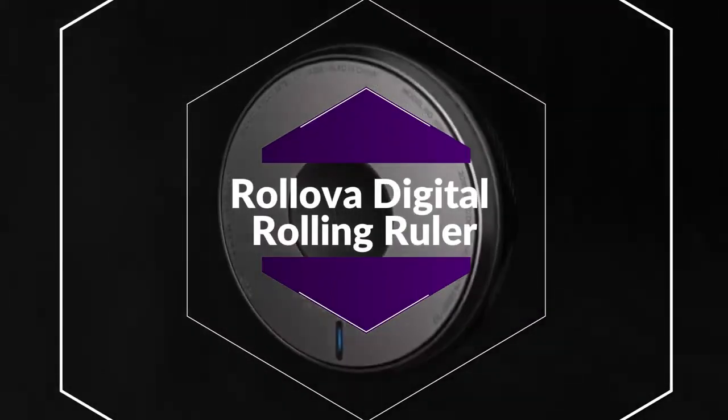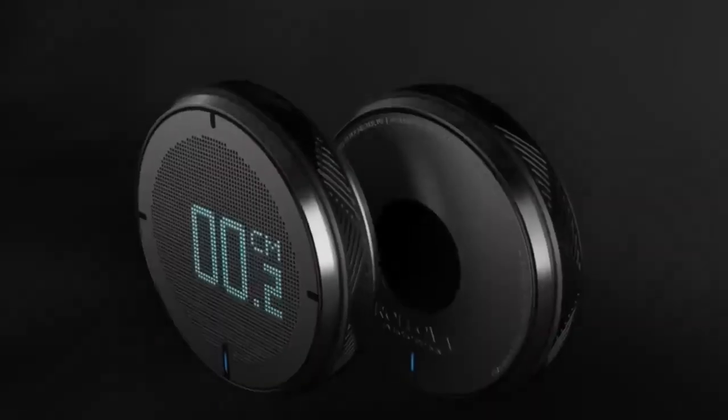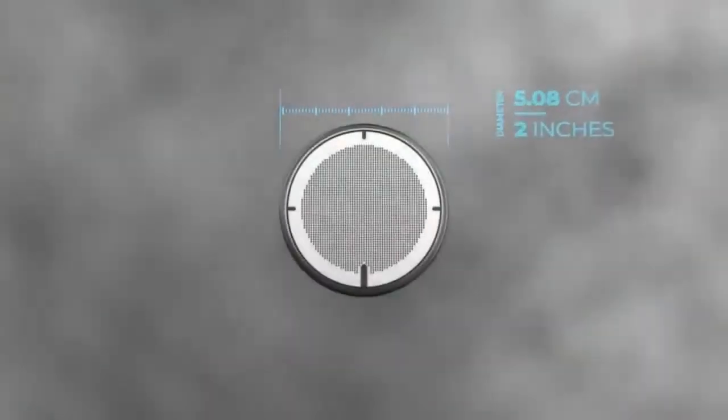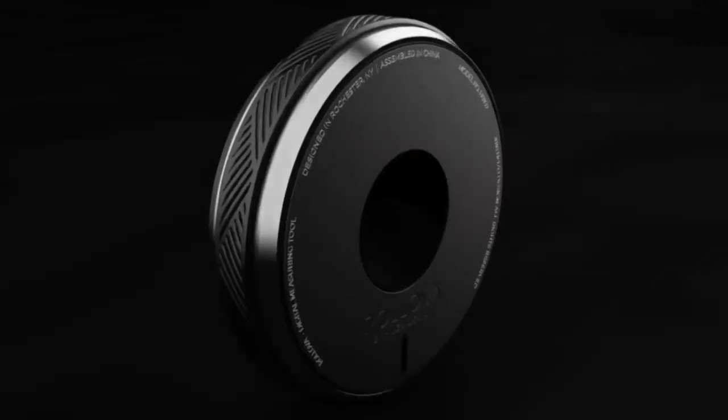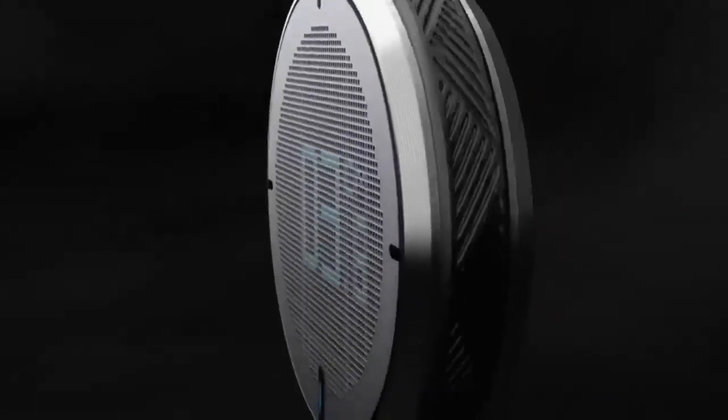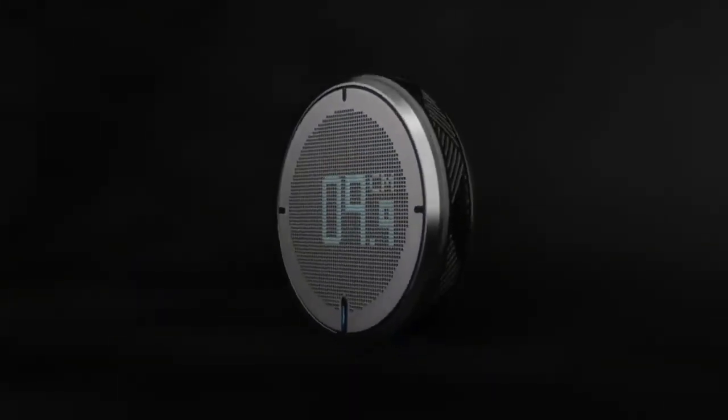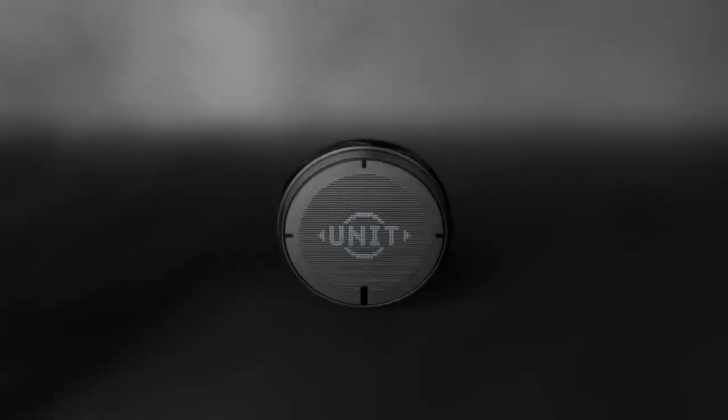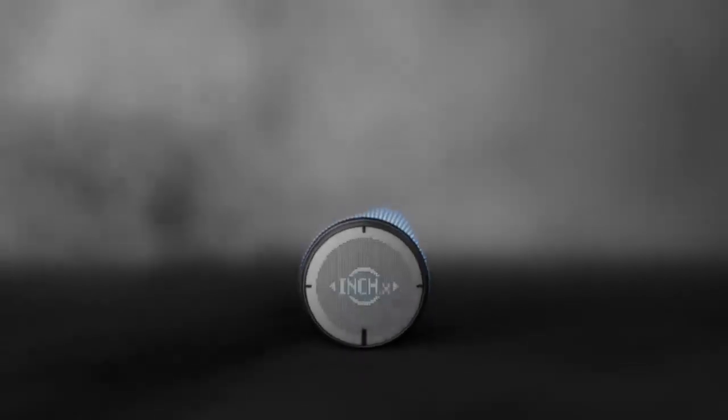Rolova is a pocket-friendly ruler that is designed to transform the way you measure things. It measures curves, lines, and a variety of surfaces that is compatible with major units of length. With one easy roll at a time, Rolova provides you with an accurate measurement on its OLED screen.